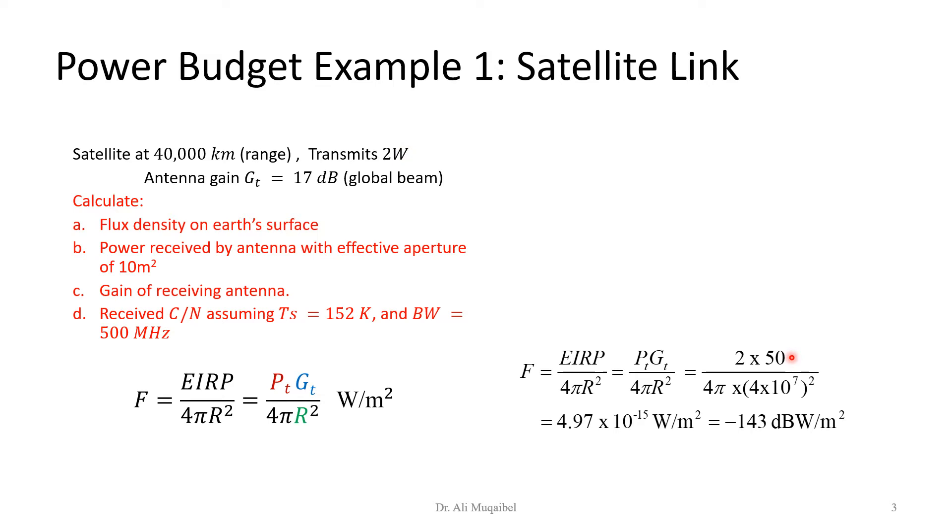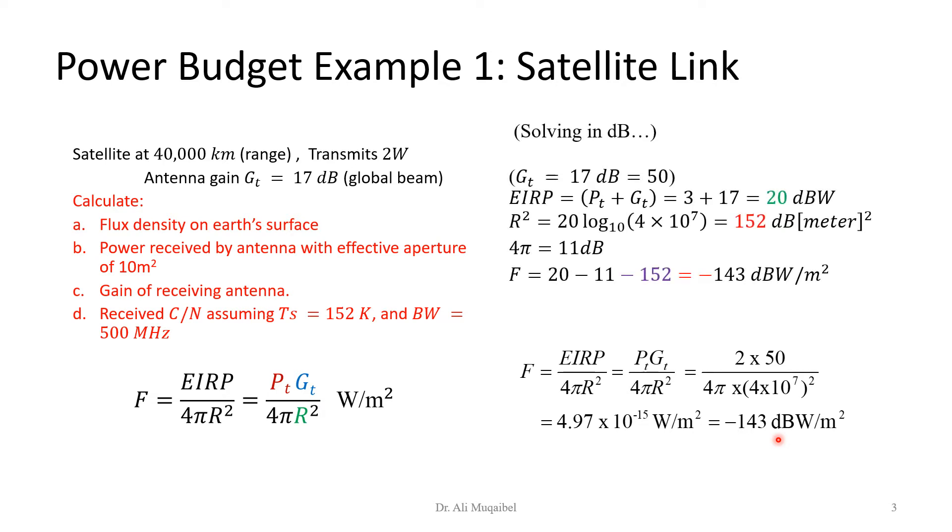That is 2 watts, and then we have the gain of the antenna. If you convert 17 dB it becomes 50 (remember that 20 dB is 100, so minus 3 dB becomes 17 which is half of 100, which is 50). Now if you look at the distance, it's 40,000 kilometers, then we convert into meters so it becomes 10 to the 7, and then we have it squared. That's a really very small flux because of the distance.